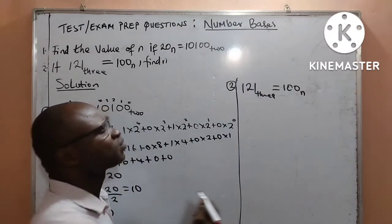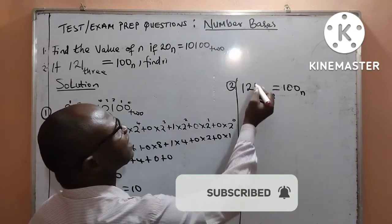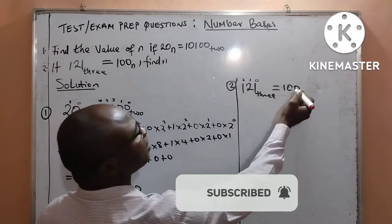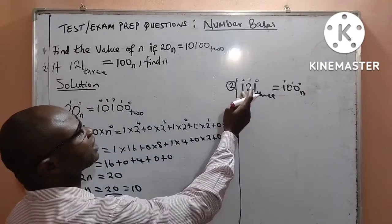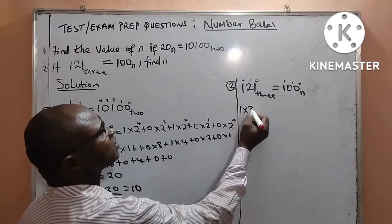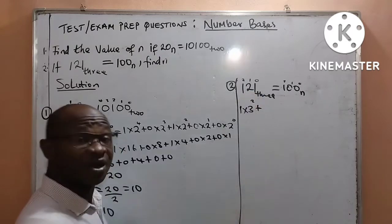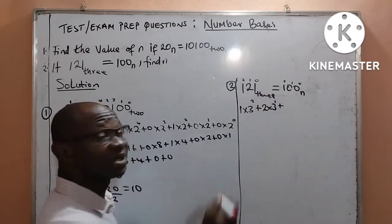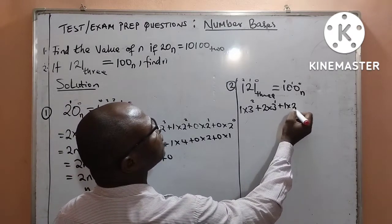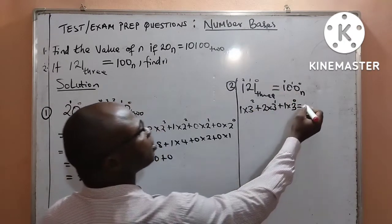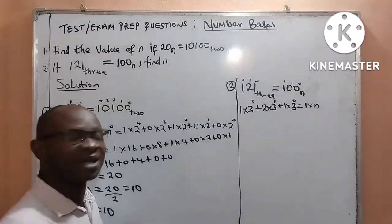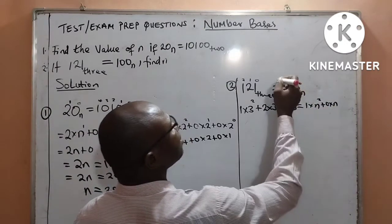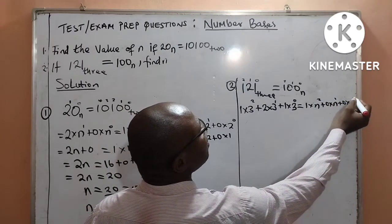Doing that, like I did in the first one, starting from the right-hand side, I assign the powers: 0, 1, 2. Doing the same thing on the right, 0, 1, 2. The first digit is 1 times the base 3 raised to power 2, plus the second digit 2 multiplied by the base 3 raised to power 1, and lastly the third digit 1 multiplied by 3 raised to power 0. It is equal to 1 times N raised to power 2, plus 0 times N raised to power 1, plus 0 times N raised to power 0.